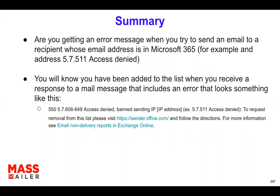Typically you would receive a bounce message whenever you're trying to send out emails to people who are having their email hosted on Microsoft servers. The message may look like this, and typically the error code is 5.7.511, access denied. It'll say something like access is denied, ban sending IP, to request removal from this list please visit so-and-so.